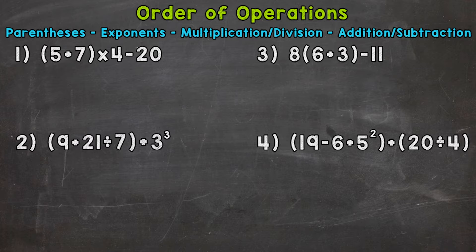I do have an intro video to the order of operations, and I would start there first before these more complex problems — I'll drop that link down in the description. If you're ready for this video, let's jump into number one, where we have parentheses 5 plus 7, end parentheses, times 4 minus 20.